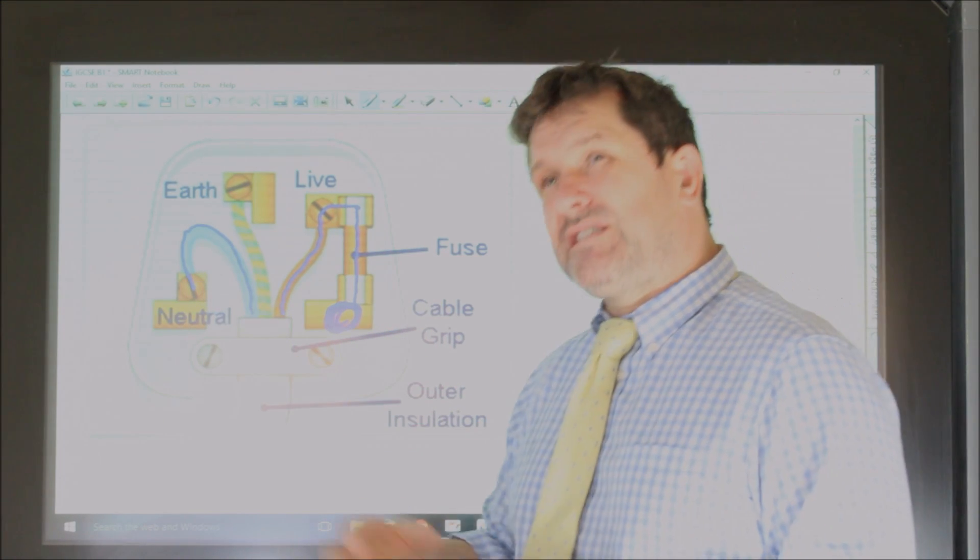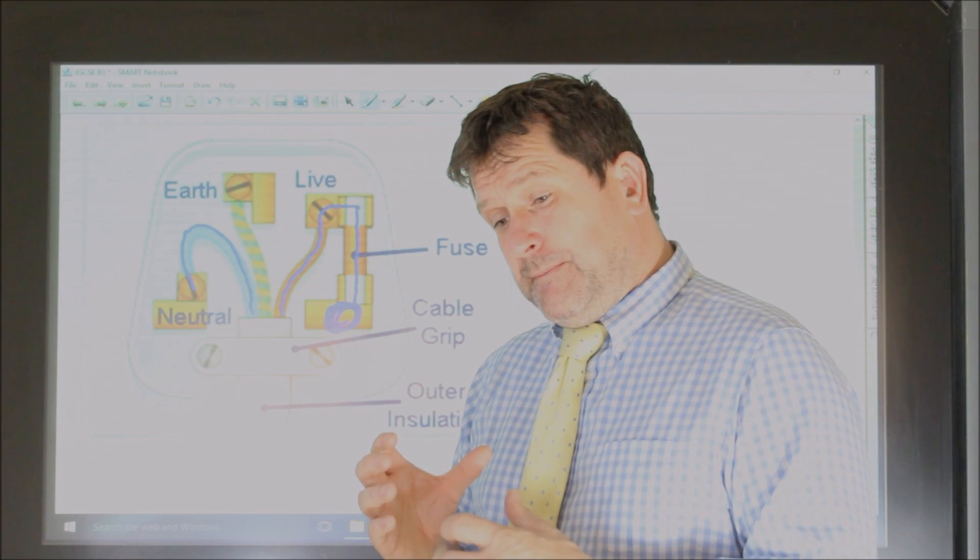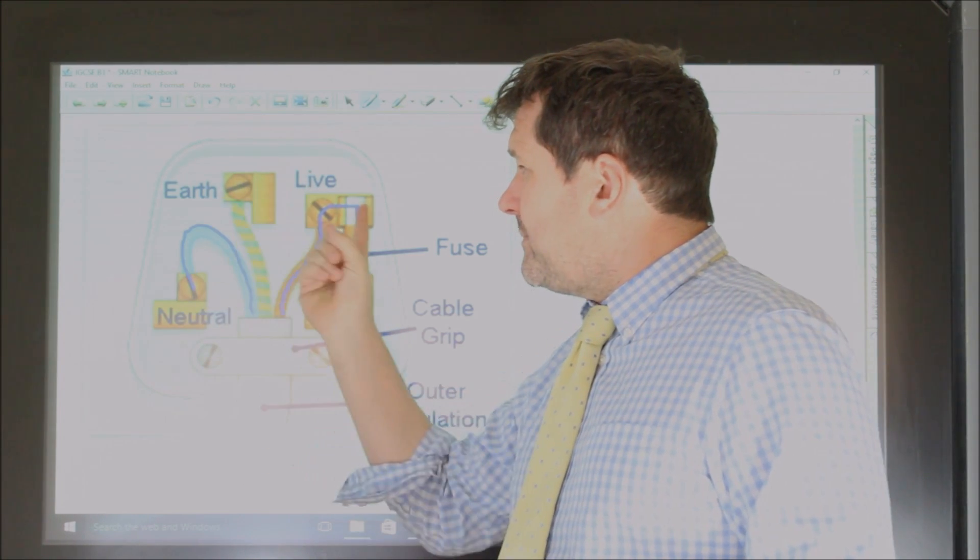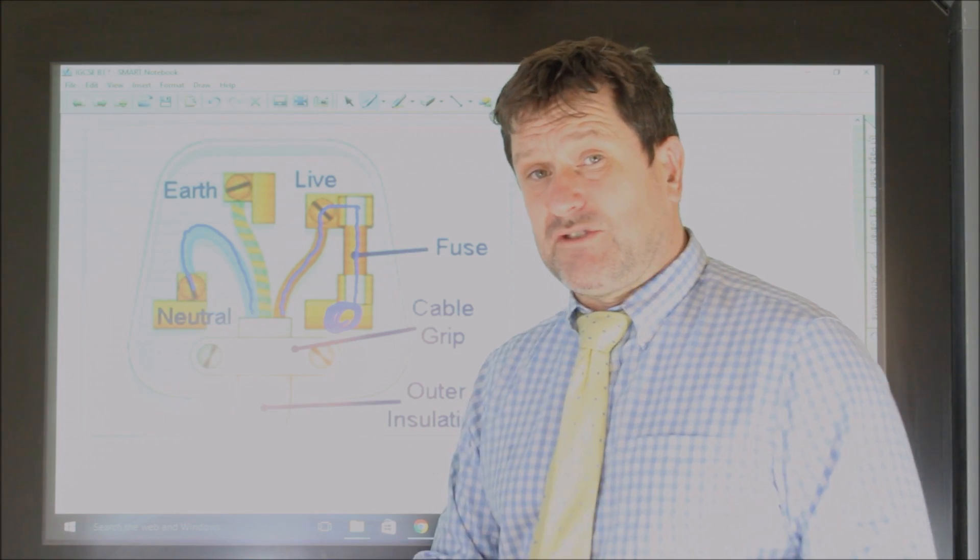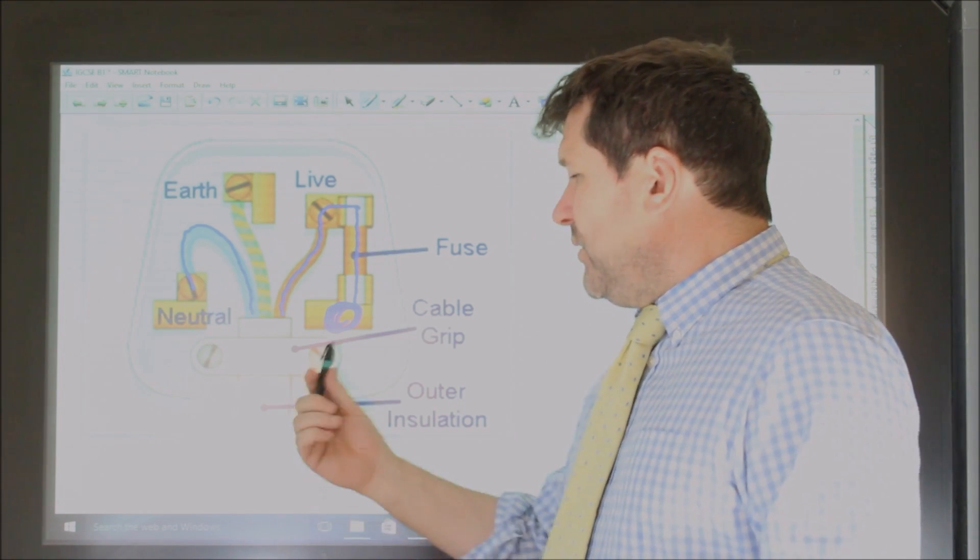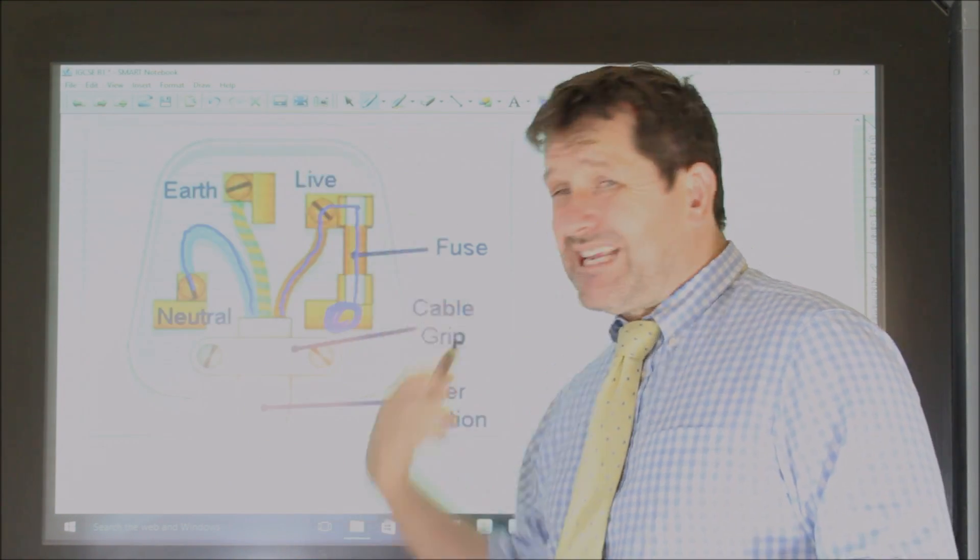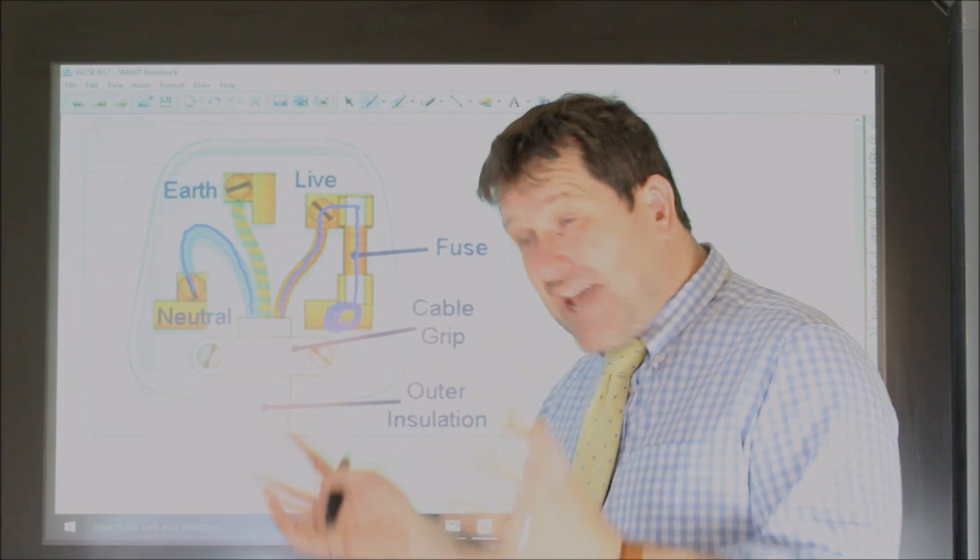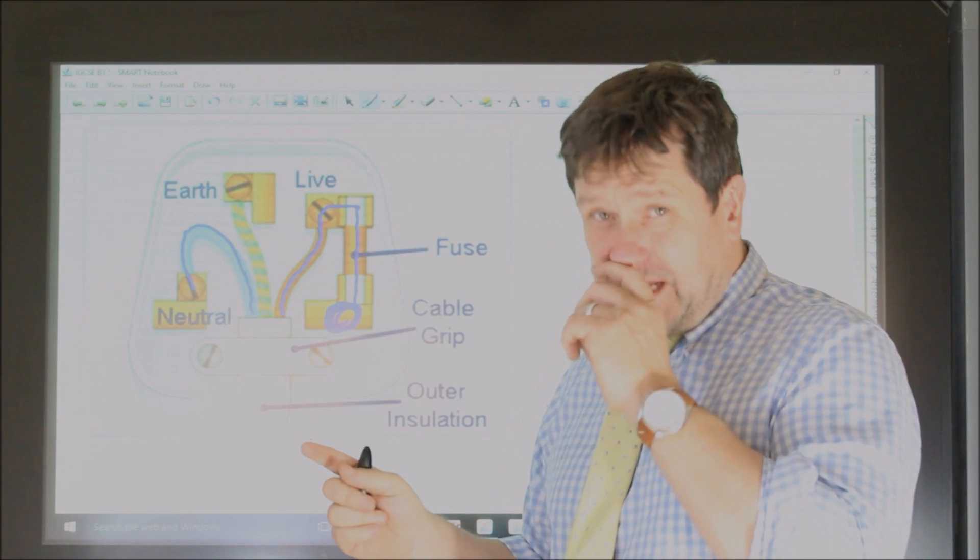Now the cable grip is there to protect in case people trip over the wires, so it doesn't pull on them and doesn't drag on them where they are connected electrically there. The whole thing is surrounded by a big plastic case because plastic is an insulator, and therefore it protects these wires and prevents electric shock.